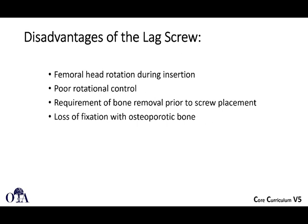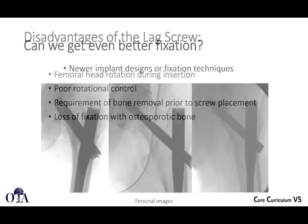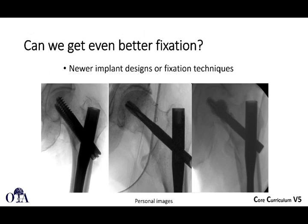What are some disadvantages of a lag screw, whether used through a nail or a sliding hip screw plate device? There's potential femoral head rotation during insertion, potentially poor rotational control after fixation, the need to remove a lot of bone with a large drill prior to screw placement, and potential loss of fixation with osteoporotic bone. So can you get even better fixation? There are some other implant designs to consider.